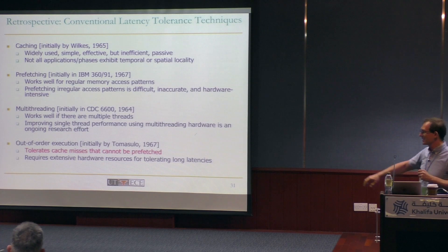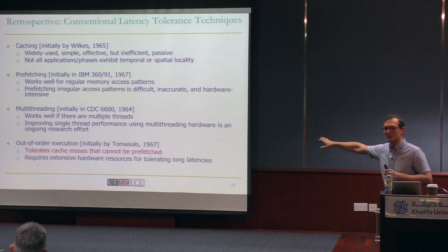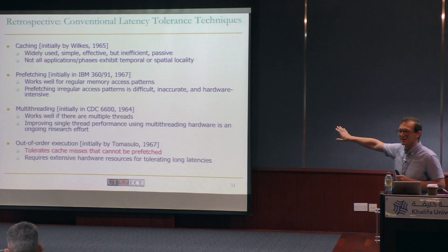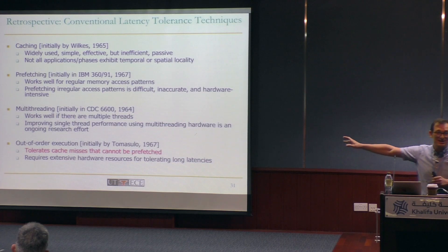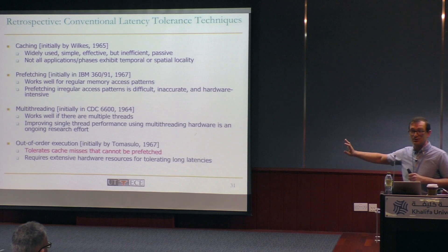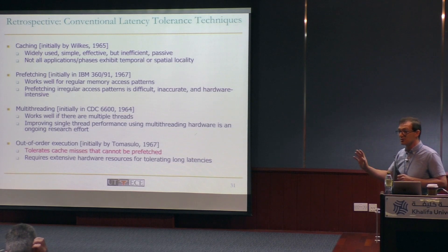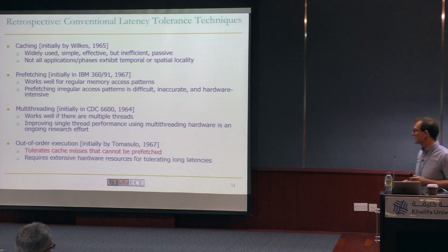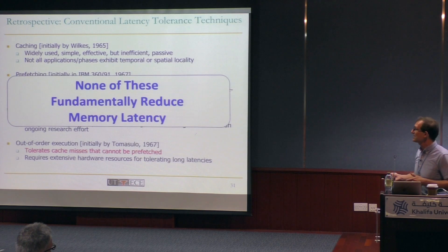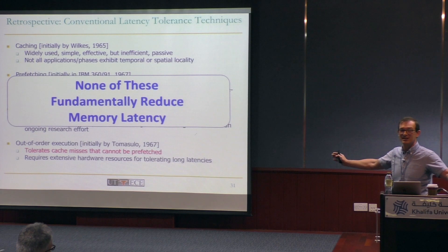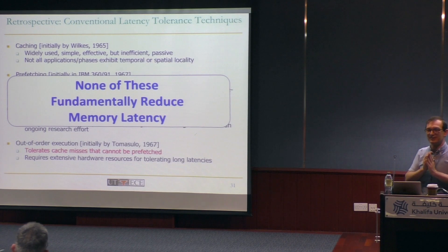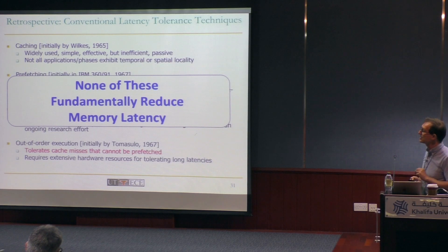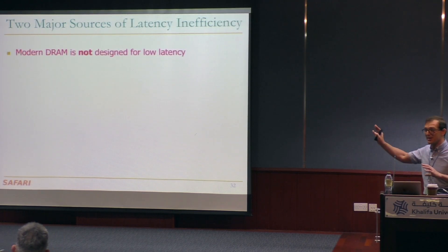This is a slide I used in 2003 in my PhD proposal and I still keep it this way. These are the major conventional latency-tolerance techniques: caching, prefetching, multi-threading, out-of-order execution. My PhD work was about developing a technique called runahead execution — a much more efficient alternative to out-of-order execution without the heavy complex structures. But if you look at all of these techniques, none of them really fundamentally reduce memory latency. Memory latency is there, and these techniques are trying to hide it or reduce it from the processor's perspective. It's a very processor-centric way of thinking.